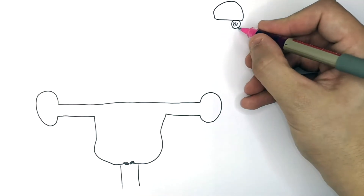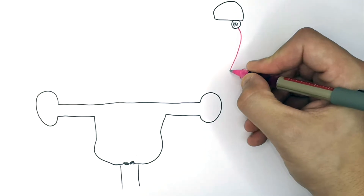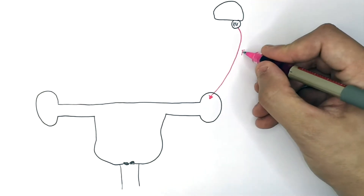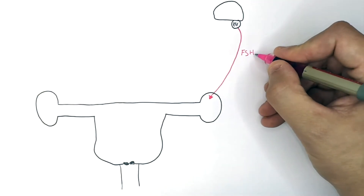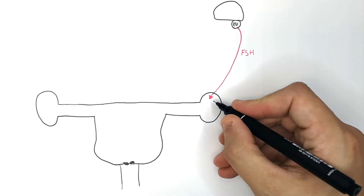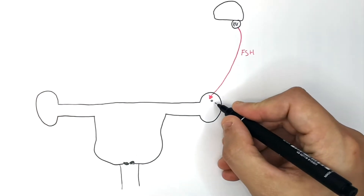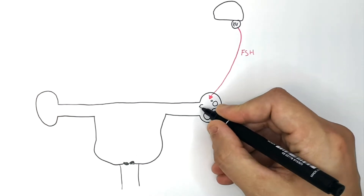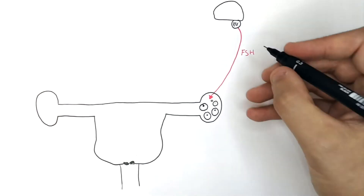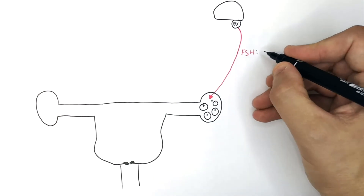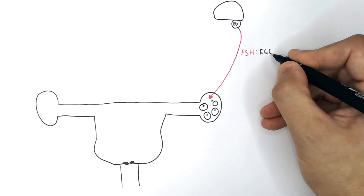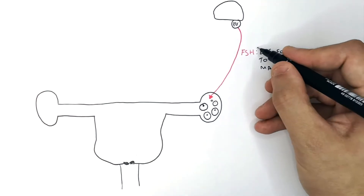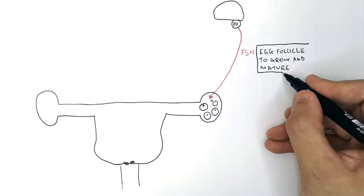We're going to start off with FSH. FSH is produced in the pituitary gland and it goes to the ovaries, where it causes the egg follicle to grow and mature.